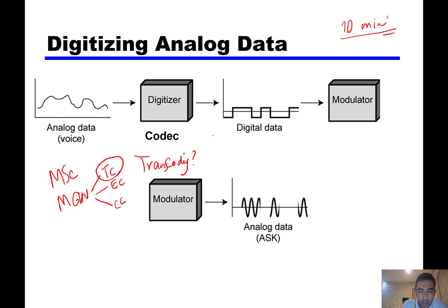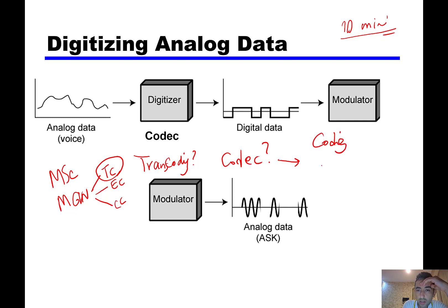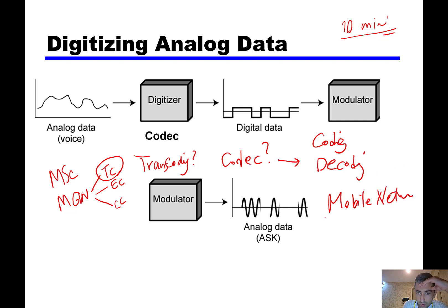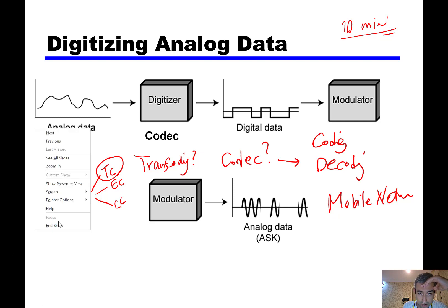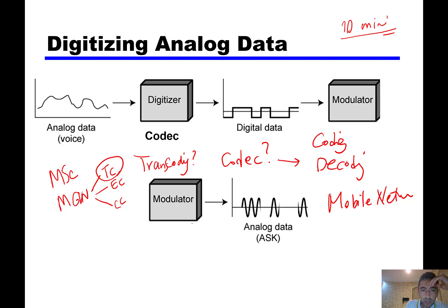To understand transcoding, we should first define codec. In information theory, codec means coding and decoding. But here in mobile networks, when we are talking about voice and audio, codec means compression and decompression.